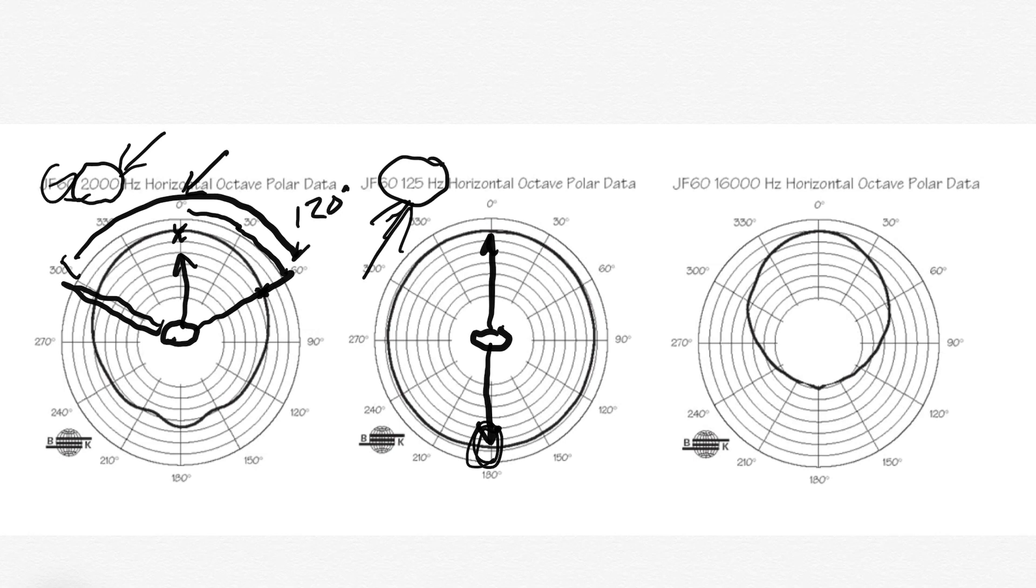Now, same loudspeaker at 16,000 hertz, very small sound waves. Now the speaker is a lot more directional. Here's my zero degrees on axis right there, and I lose one increment, 5 or 6 dB, at about 30 degrees off axis. So now I have 60 degrees of throw for 16k. That's how I would read this polar plot.